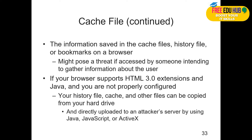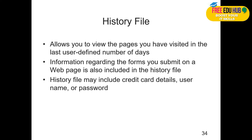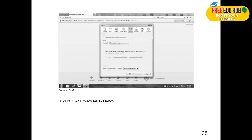If the browser supports HTML3 extensions and Java and they are not properly configured, your history file, cache, and other files can be copied from your hard drive and decrypted to gather information. They can be directly uploaded to an attacker's server using JavaScript or ActiveX, allowing the attacker to read the content saved in those files. The history file allows you to view pages visited in the last user-defined number of days, and information submitted in forms — including credit card details or usernames and passwords — may be included.